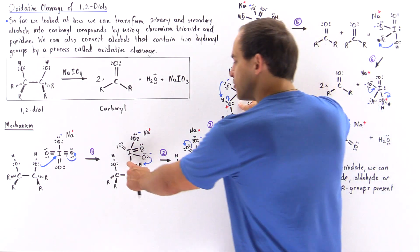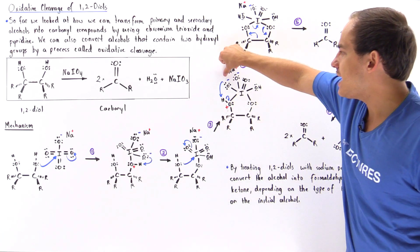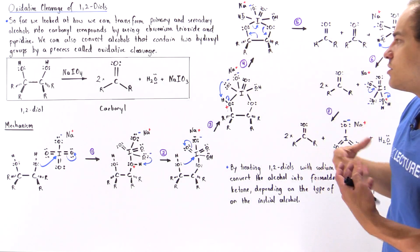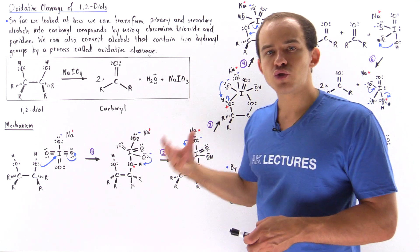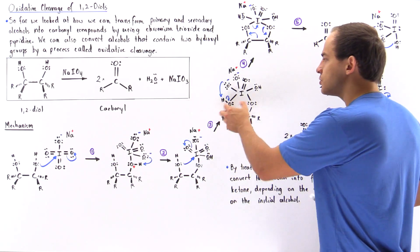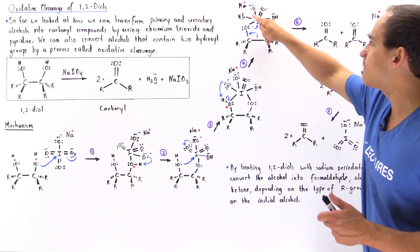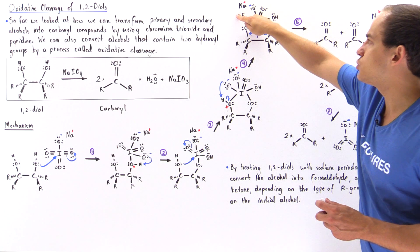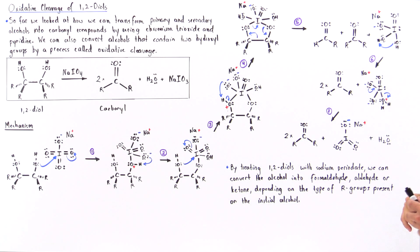Once again, this five-membered ring intermediate has a positive charge on one oxygen and a negative charge on another, which is not very stabilizing. In step four, the H atom is transferred from the positively charged oxygen onto the negatively charged oxygen, removing both charges. We now have the five-membered ring without the two charges.